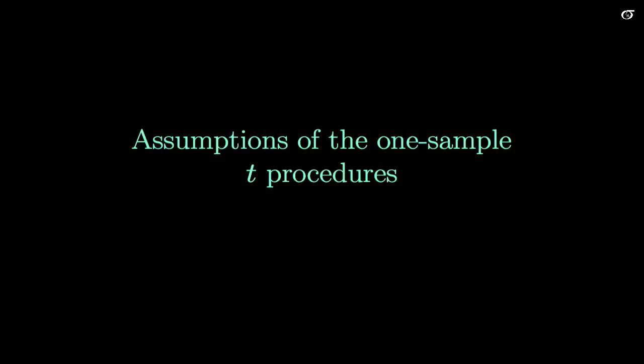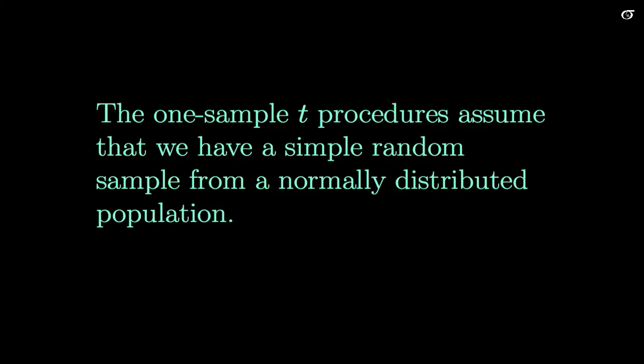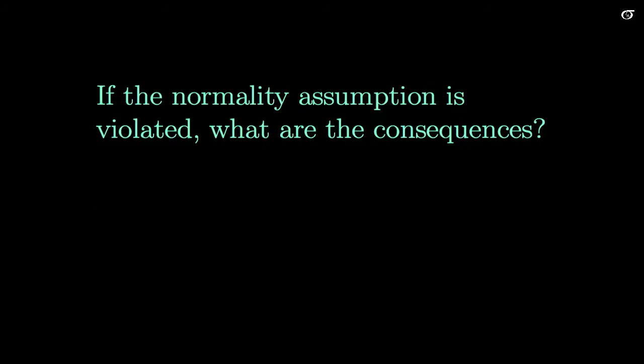We're going to be investigating the assumptions of the one-sample t procedures. The one-sample t procedures assume that we have a simple random sample from a normally distributed population, and here we're going to ask ourselves: if that normality assumption is violated, what are the consequences? So let's look at that normality assumption in a bit more detail.